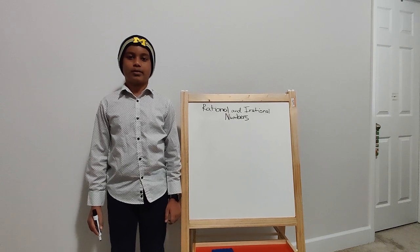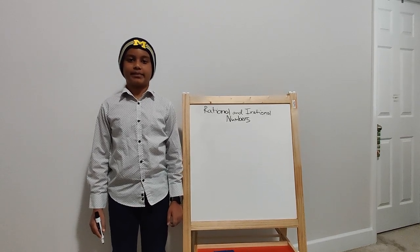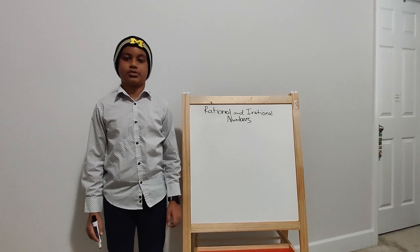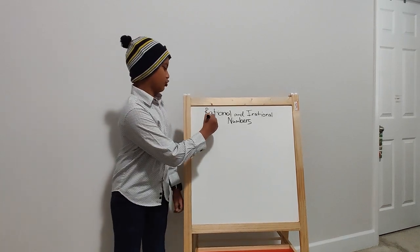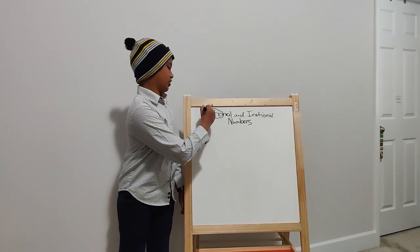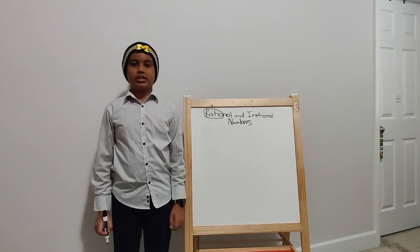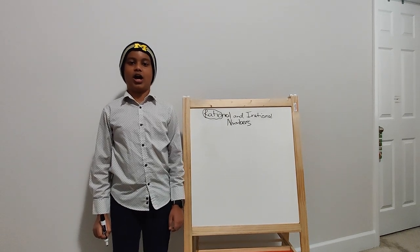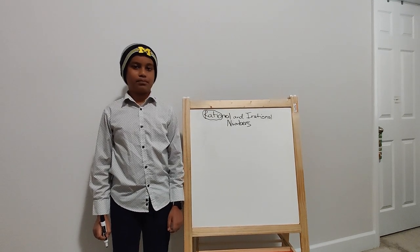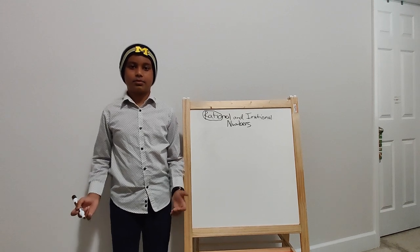A rational number is a number that can be expressed as a simple fraction. You can think of the term ratio in rational. Irrational numbers are the opposite. They cannot be expressed as a simple fraction.